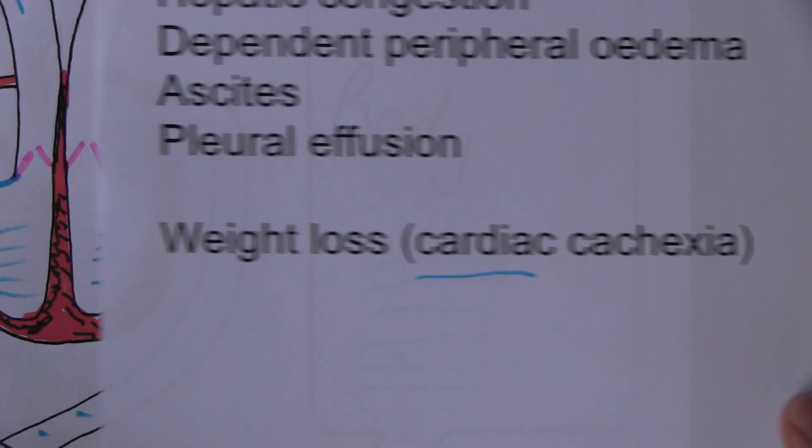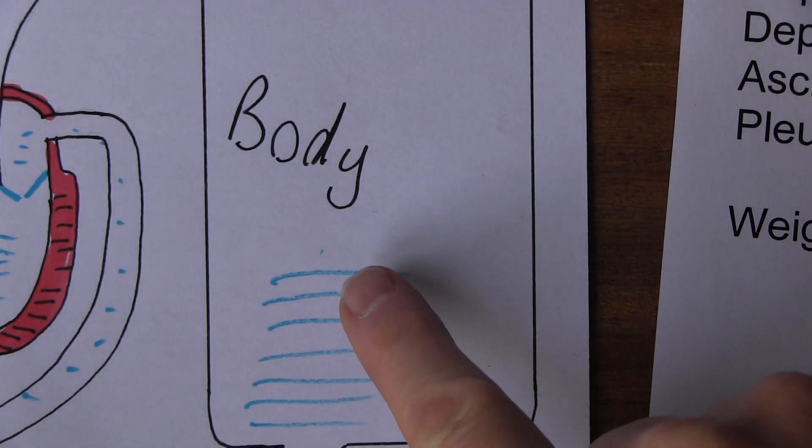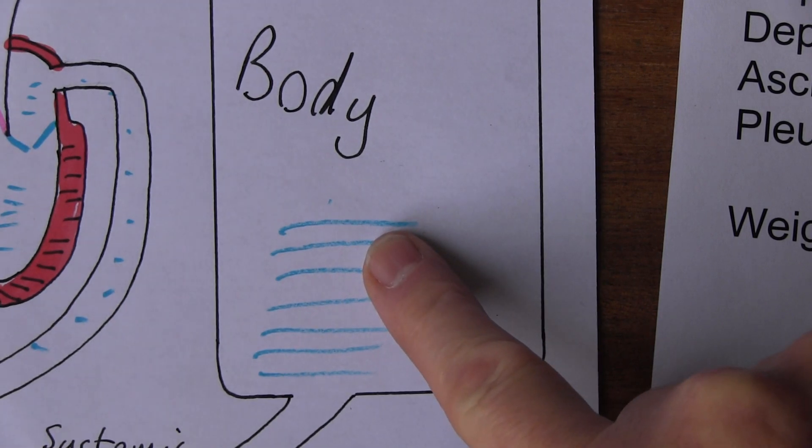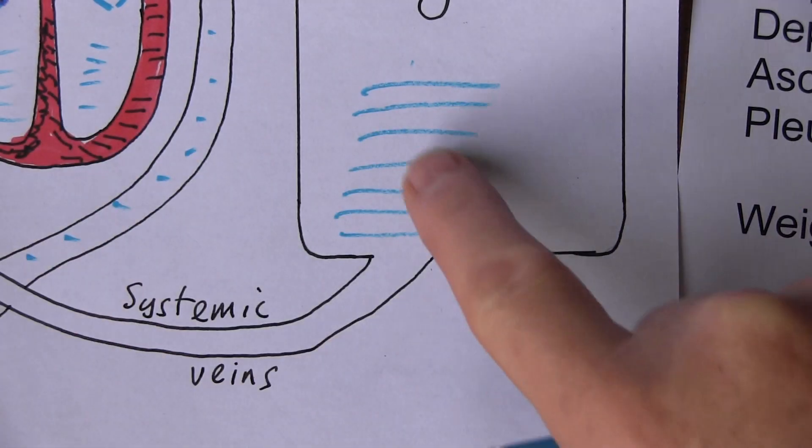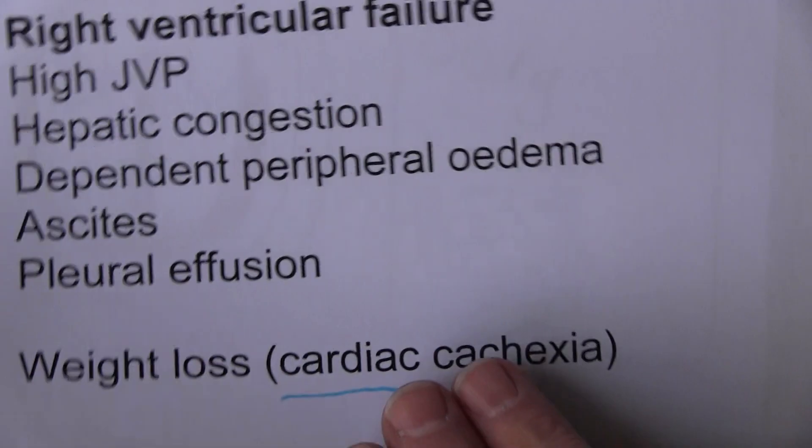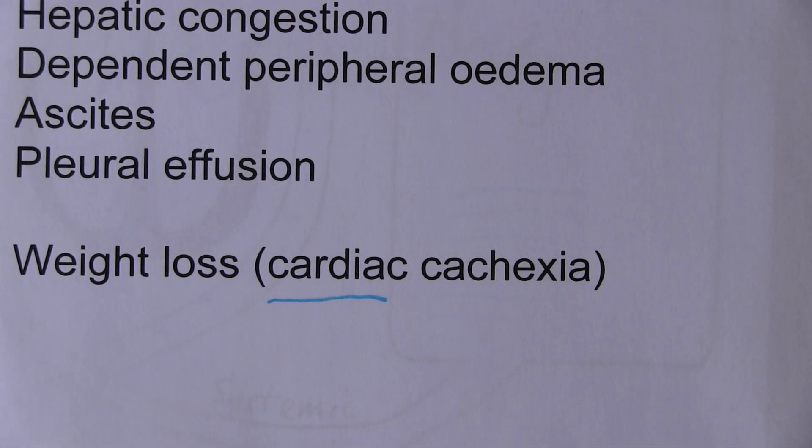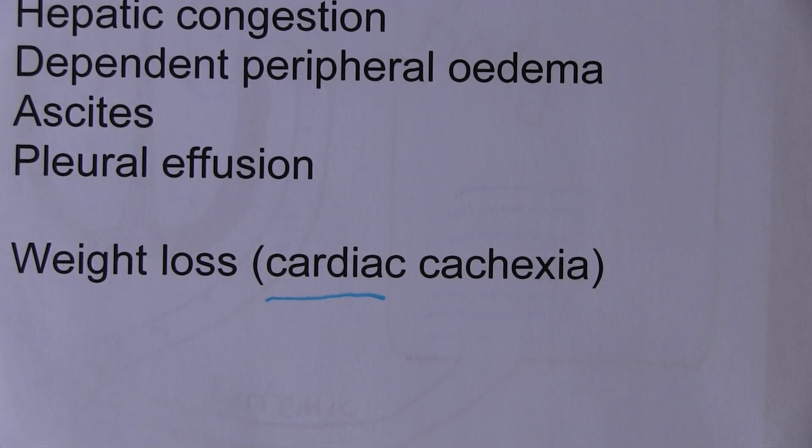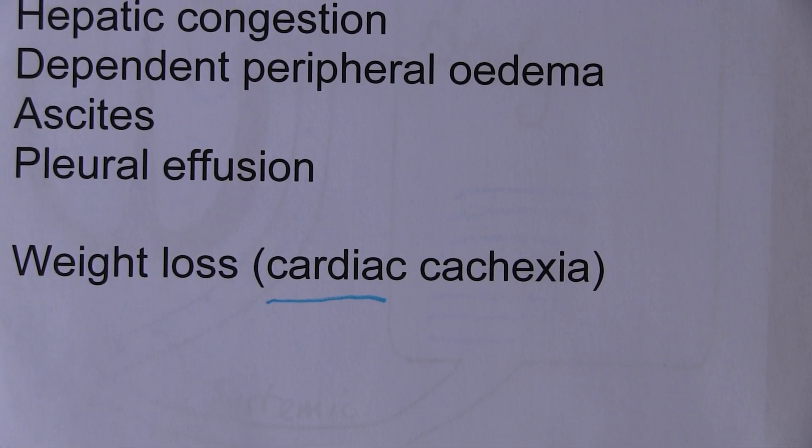This is because of congestion. The gastrointestinal tract is part of the body, part of the systemic circulation. There's going to be congestion here. That can lead to anorexia. Anorexia means the patient doesn't feel hungry, loss of appetite. Congestion in the organs of the gastrointestinal tract can impair absorption of food. There's reduced absorption of nutrients into the blood because of the GI congestion.